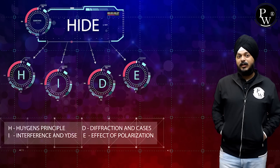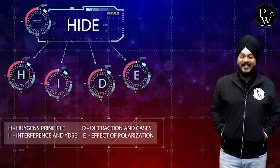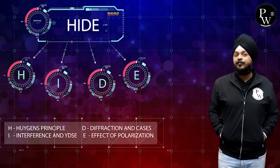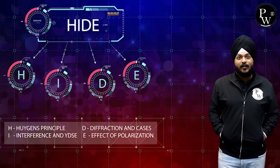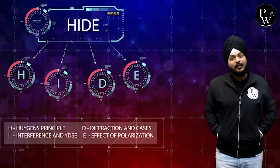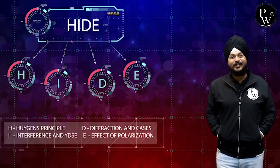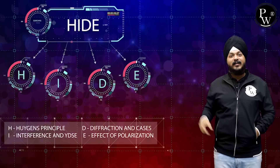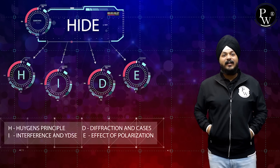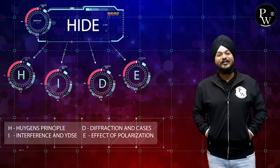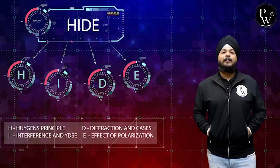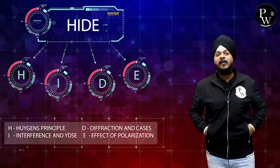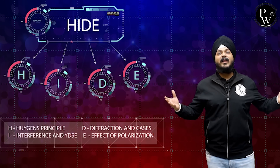What about the last initial E? E stands for the effect of polarization, followed by Brewster's law and types of polarization. You can see how this simple word HIDE is really helping us using the mnemonics technique to memorize the entire chapter of Wave Optics.